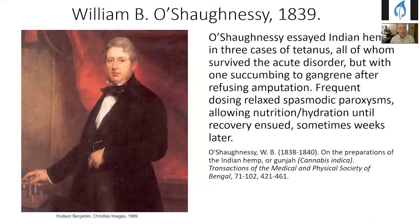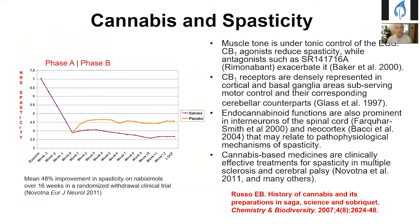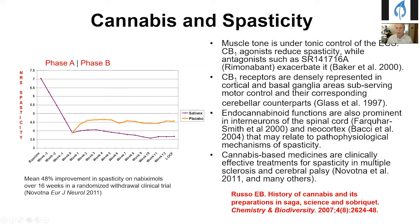In modern times, we understand why this works. Muscle tone is under tonic control of the endocannabinoid system: CB1 agonists like THC reduce spasticity, while antagonists like rimonabant make it worse. CB1 receptors are densely represented in the areas of the brain and spinal cord that mediate muscle tone. Cannabis-based medicines, specifically nabixamols, are now approved in 29 countries for spasticity.